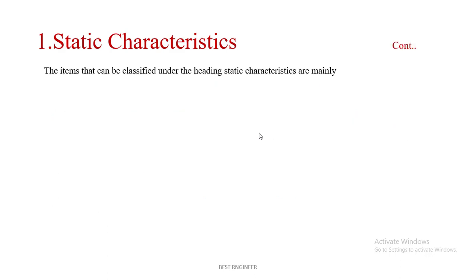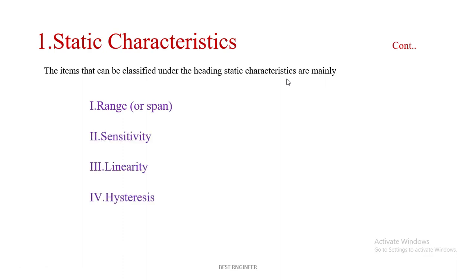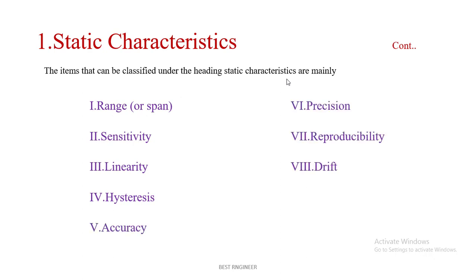The items that can be classified under static characteristics are mainly: range, sensitivity, linearity, hysteresis, accuracy, precision, reproducibility, and drift. We will see these static characteristics one by one.